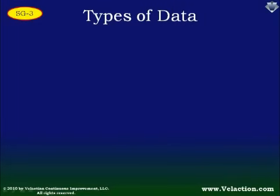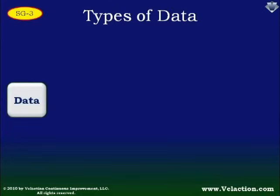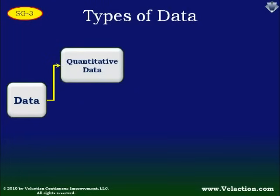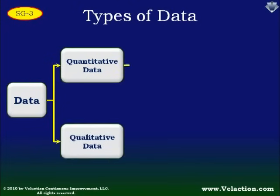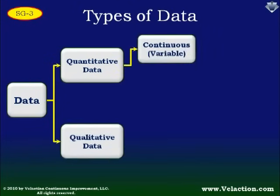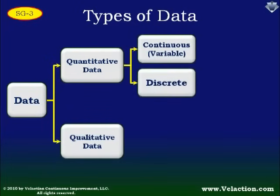As you start thinking about data, there's really a tree of the types of data that you can have. Data is a pretty broad term, and most people categorize it into two main views. The first is quantitative data, and obviously the other one is qualitative. But in the quantitative piece of it, you have continuous or variable data and then you have discrete data.